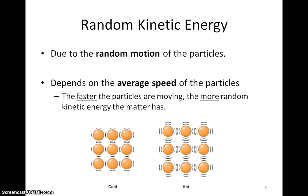Random kinetic energy is due to the motion of the particles. The word 'random' is there to remind us that the motion of the particles is random. The amount of random KE depends on the average speed of the particles. The faster the particles are moving, the more random kinetic energy the matter has.